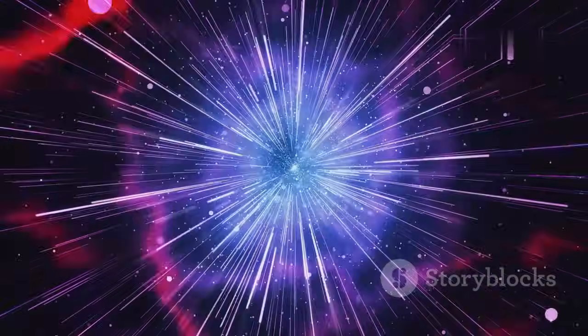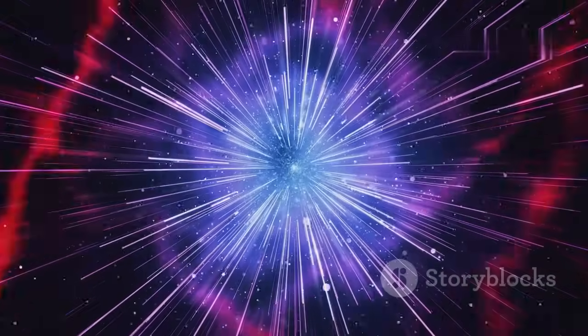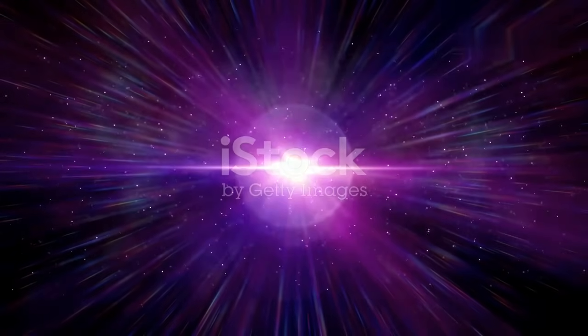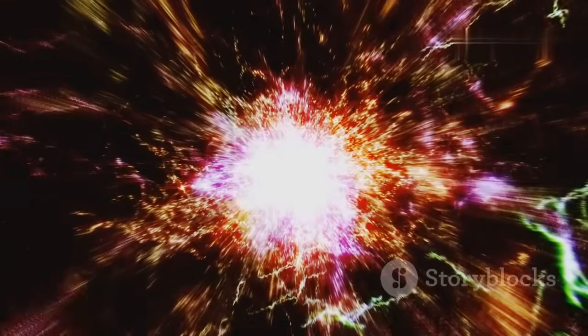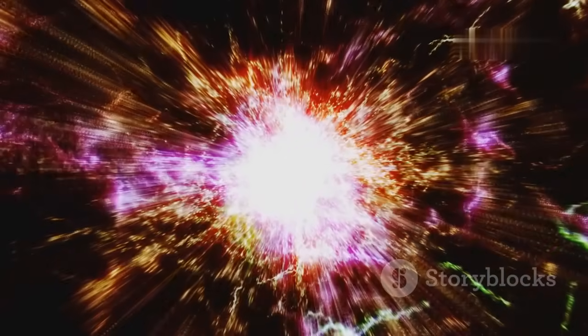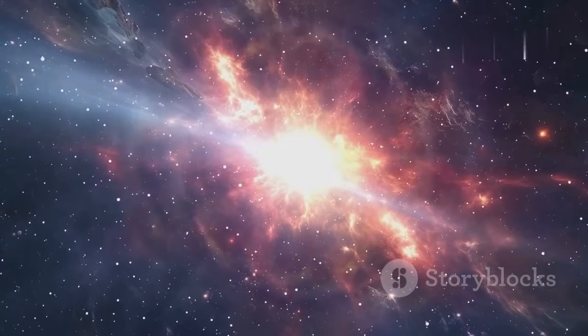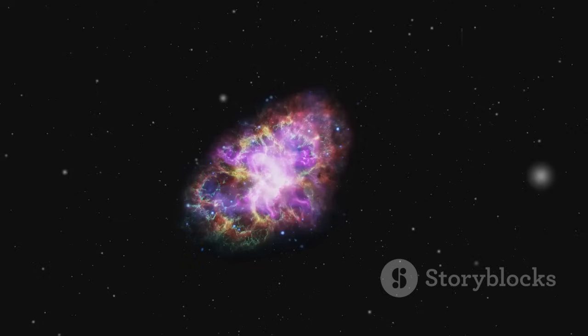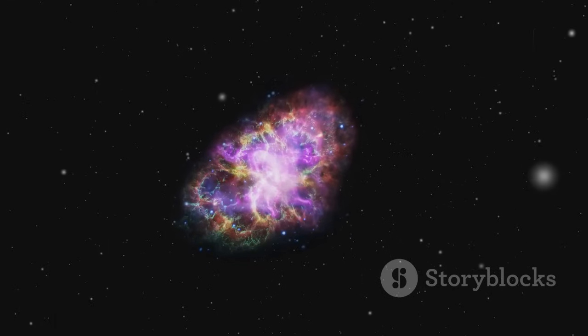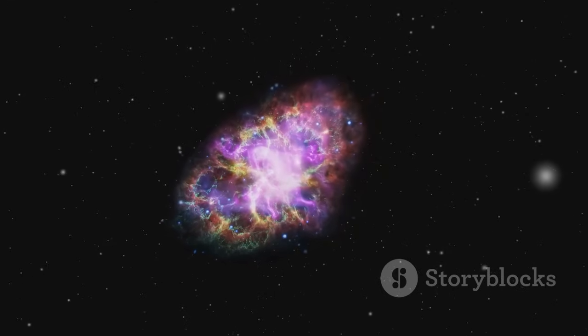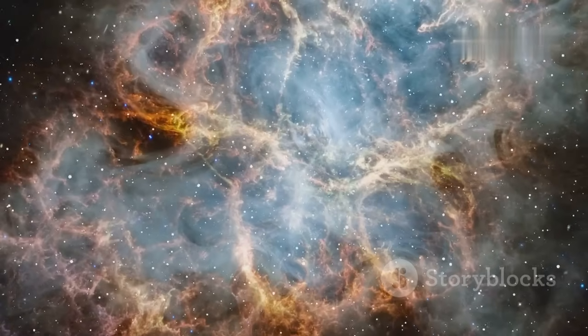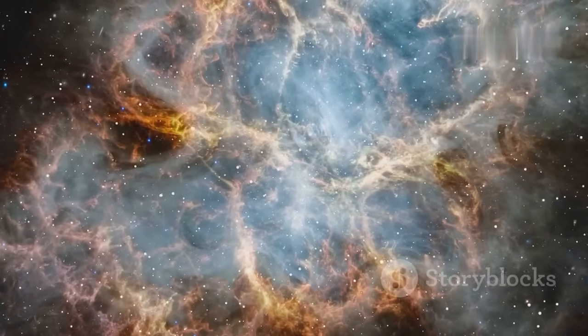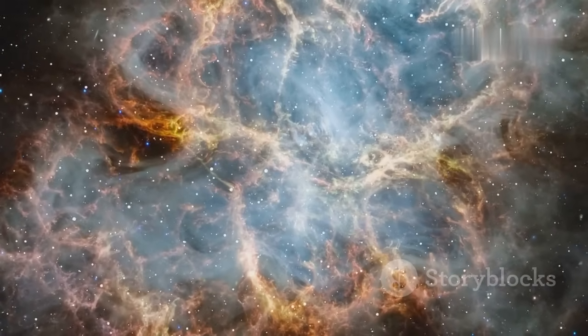Massive stars live fast and die spectacularly, in a supernova explosion. After burning through hydrogen and helium their cores fuse heavier elements, building up layers like an onion. Fusion continues until the core is iron which cannot release energy by fusion. With no energy to counter gravity, the core collapses in less than a second. A shockwave blasts outward, tearing the star apart in a supernova. For a brief moment, it outshines its entire galaxy. The explosion forges elements heavier than iron, gold, platinum, uranium, and scatters them into space.